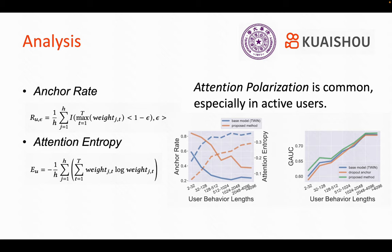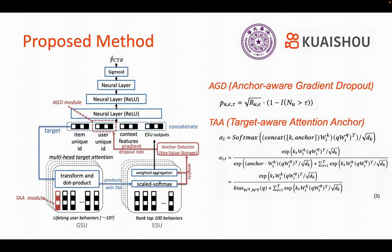The results show that active users have more frequently polarized weights. These frequently polarized weights could make the model fail to capture a user's diversified interests and harm the learning of behavior embeddings, as the gradients on these features are nearly zero.